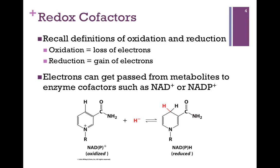Enzyme cofactors such as NAD+ or NADP+. On the left we have NAD+ — there's an extra phosphorus atom if it's NADP+. This is the oxidized form; you'll notice the positive charge. It can collect a hydride ion, which again is a proton and two electrons, and that forms NADH or NADPH as illustrated here. So on the left we have the oxidized form, and on the right the reduced form.